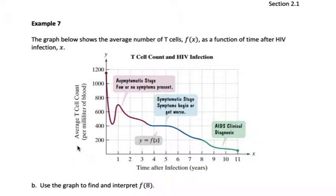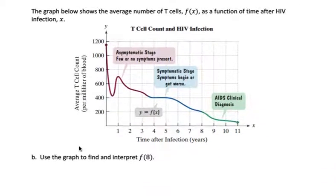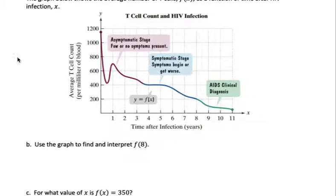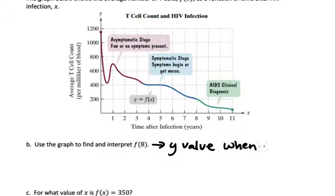Our question is to use the graph to find and interpret f of 8 for question B. f of 8 means that we want to find the y value — the function value — when the x value is equal to 8. So looking at my graph, x equals 8 is right here. The y value there looks like it's right on this grid line, which is 200.